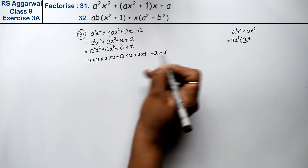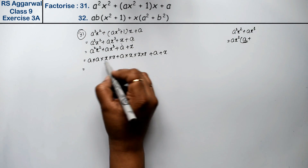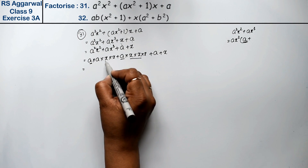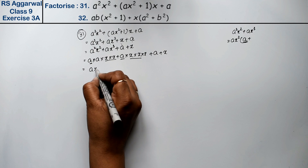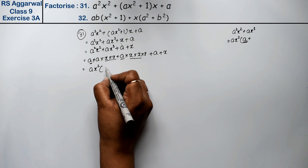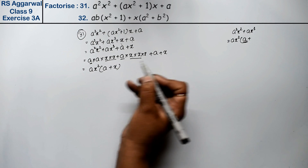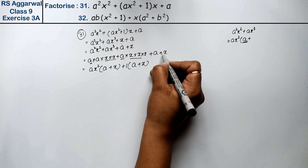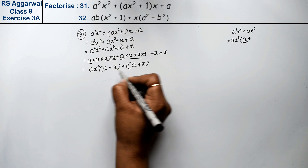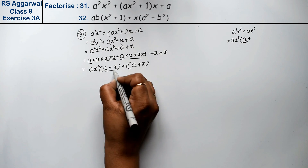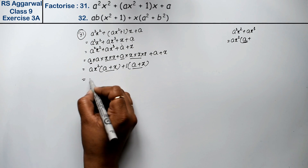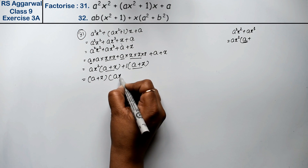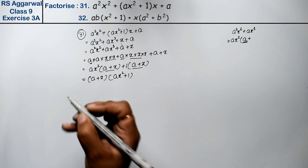So what is left with these two terms? 1, a, and 2x are common — that is, ax is common. And for the last two terms, a plus x will be left. So we write 1 plus x is left here, and the final answer is ax²(a + x) plus 1(a + x), giving the factored answer.